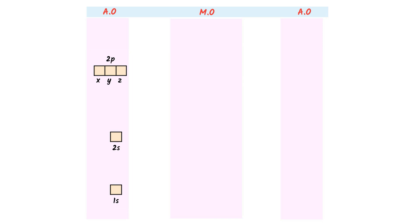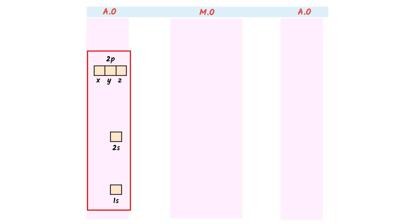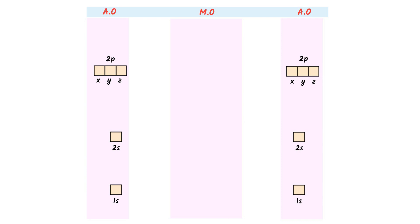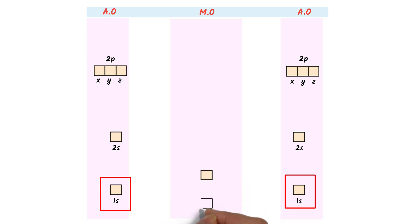Now listen carefully. I copy these atomic orbitals from the left hand side and I write them at the right hand side. I write 1s, 2s, and 2p. We know that when atomic orbitals combine together, they form molecular orbitals. This one atomic orbital and this one atomic orbital combine together to form two molecular orbitals.